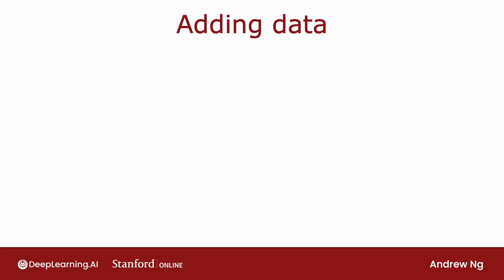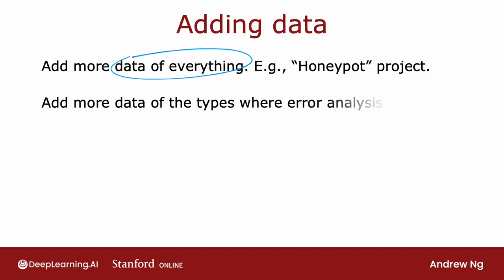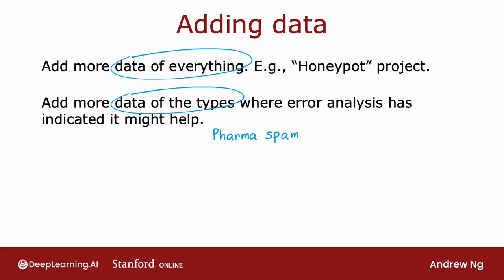When training machine learning algorithms, we almost always wish we had more data, and it's tempting to just get more data of everything. But trying to get more data of all types can be slow and expensive. Instead, an alternative is to focus on adding more data of the types where error analysis has indicated it might help. If error analysis revealed that farmer spam was a large problem, you may decide on a more targeted effort — not to get more data of everything, but to focus on getting more examples of farmer spam.